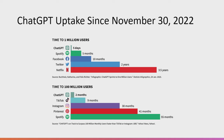ChatGPT was released on November 30th, 2022, and it was one of the fastest uptakes of technology or apps that has happened to date. The time to a million users for ChatGPT was just five days.